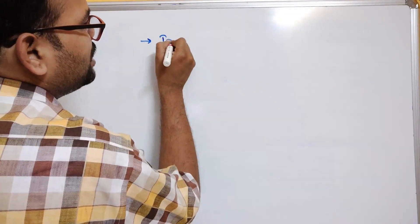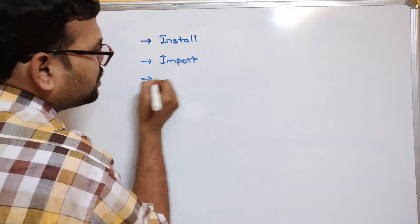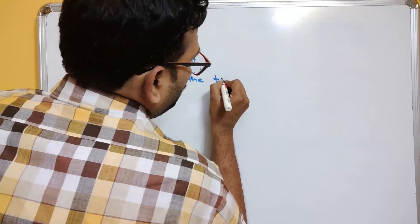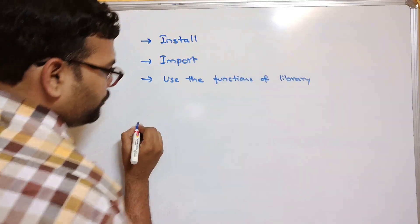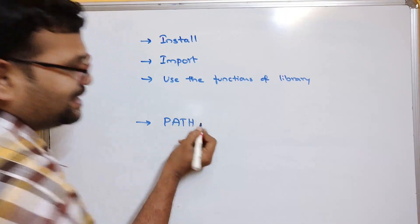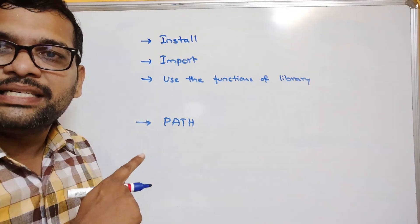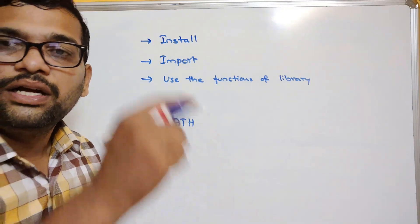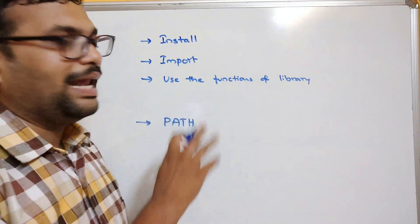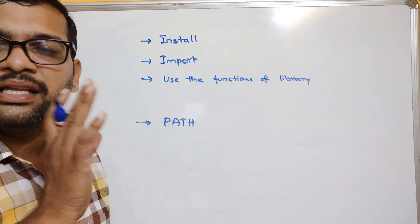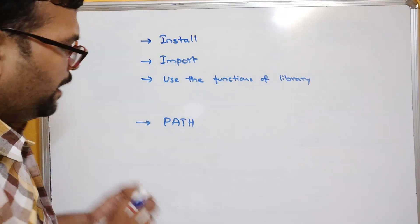To use a library, first install it. If the library is already installed, you can directly call it. You need to set the PATH in your system environment variables. The PATH setup was already explained in previous sessions — follow the link in the description.